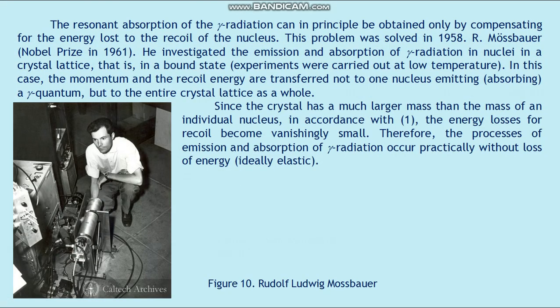Resonance absorption of gamma radiation can in principle be obtained only by compensating for the energy loss due to the recoil of the nucleus. This problem was solved in 1958 by Rudolf Mössbauer (Nobel Prize 1961). He investigated the emission and absorption of gamma radiation by nuclei in a crystal lattice, i.e., in a bound state. Experiments were carried out at low temperature. In this case, the momentum and the recoil energy are transferred not to one nucleus emitting or absorbing the gamma quantum, but to the entire crystal lattice as a whole. Since the crystal has a much larger mass than that of an individual nucleus, in accordance with formula 1, the energy losses for recoil become vanishingly small. Therefore the processes of emission and absorption of radiation occur practically without loss of energy — ideally elastic.